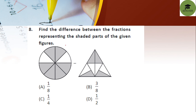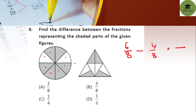Question 8: find the difference between the fractions represented by the shaded parts of the given figures. The first figure has 8 parts with 6 shaded, so it is 6/8. The second figure has 8 parts with 4 shaded, so it is 4/8. The difference is 6/8 − 4/8 = 2/8, which simplifies to 1/4. Option C is your correct answer.